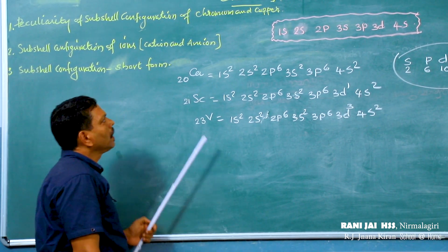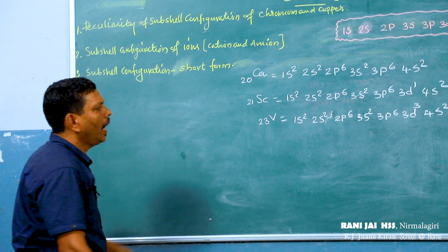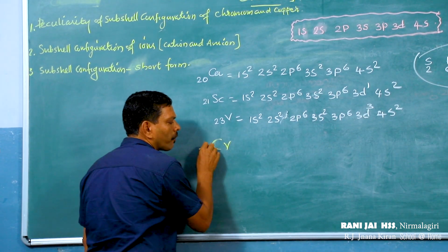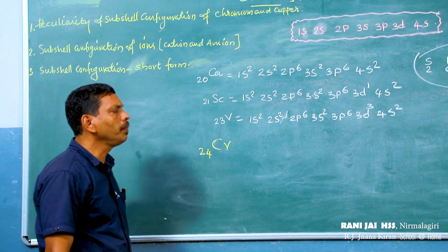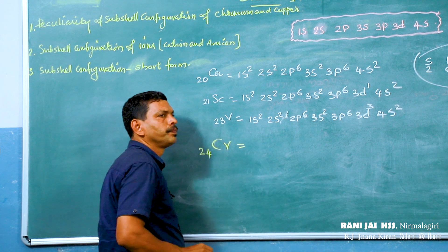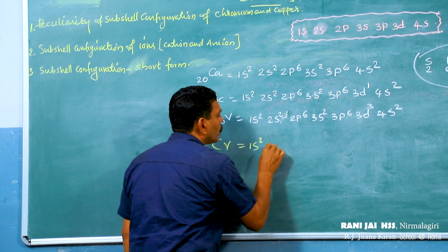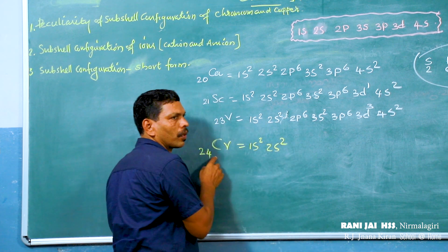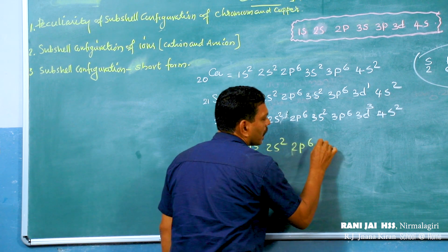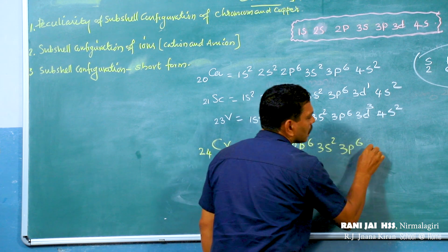Now, what about the electronic configuration of chromium? The atomic number of chromium is 24. How can we write the subshell electronic configuration of chromium? Starting: 1s2, 2s2, 2p6, 3s2, 3p6 — that accounts for 18 electrons, then we continue filling.